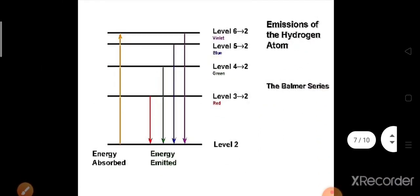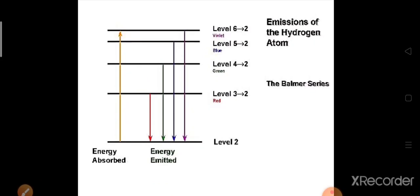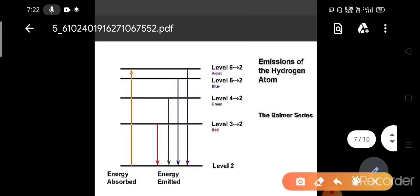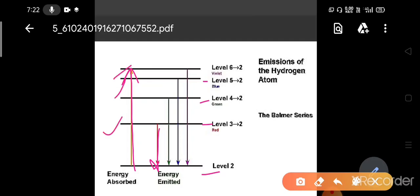We have to understand this from the atomic point of view — why we get discrete spectral lines in the case of atoms. Suppose we take the simplest atom, hydrogen. The energy levels are n = 1, 2, 3, 4, 5. If energy is absorbed, it excites the electron to a higher excited state, then it comes back down and radiates. The radiation we get appears as discrete lines because the energy levels are discrete.